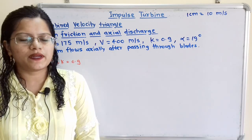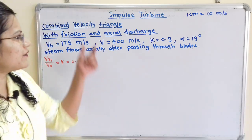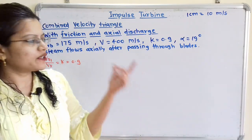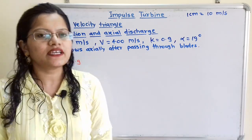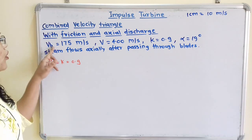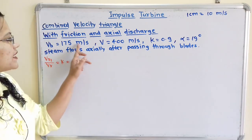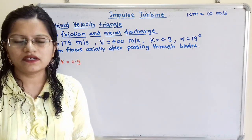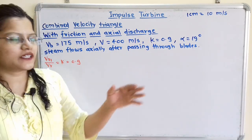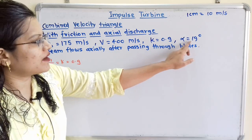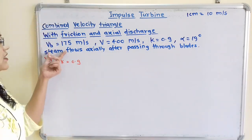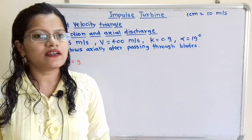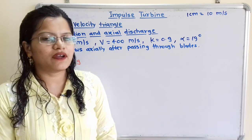We will now solve one problem to understand how to draw the combined velocity triangle with the effect of friction and axial discharge for an impulse turbine. The given data: velocity of blade Vb equals 175 m/s, absolute velocity at inlet V equals 400 m/s, coefficient of velocity or friction factor K equals 0.9, alpha equals 19 degrees, and it is given that steam flows axially after passing through the blades — this is the case of axial discharge. We have to draw the combined velocity triangle diagram.